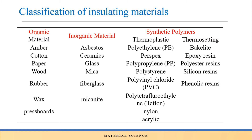Examples of organic materials include amber, pattern, paper, wood, rubber, wax, and pressboard — these are naturally available or taken from trees or plants. Examples of inorganic materials are asbestos, ceramics, and glass. Synthetic materials, obtained from a polymerization process, include two types: thermoplastic and thermosetting. Examples of synthetic polymers are polyethylene and bakelite.